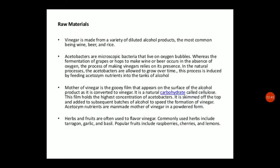Acetobacter are microscopic bacteria that live on oxygen bubbles, whereas the fermentation of grapes or hops to make wine or beer occurs in the absence of oxygen. The process of making vinegar relies on the presence of oxygen. The acetobacter are allowed to grow over time, induced by feeding acetylsyme nutrients into tanks of alcohol. Acetobacter is an aerobic bacteria.